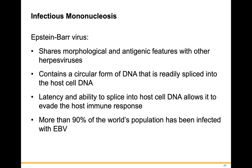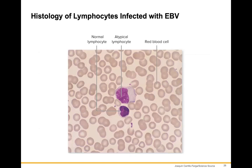Infectious mononucleosis is caused by the Epstein-Barr virus, which shares morphological and antigenic features with other herpes viruses. It contains a circular form of DNA that is readily spliced into the host cell DNA. Latency and the ability to splice into the host genome allows it to evade host immune responses. More than 90% of the world's population has been infected with Epstein-Barr virus, and a blood smear shows atypical lymphocytes affected by the virus compared to normal lymphocytes.